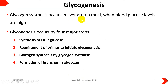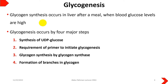Now coming to glycogenesis — as its name indicates, whenever the word 'genesis' is used it means synthesis of that molecule. So glycogenesis is the synthesis of glycogen. It occurs in the liver after a meal when blood glucose levels are high. After eating, absorbed glucose reaches the liver through the hepatic portal vein, and the excess glucose is converted into glycogen.